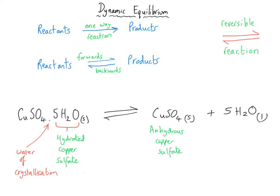In that reaction the forward reaction is endothermic, meaning the temperature drops and it requires being heated to work. The reverse reaction is exothermic, meaning when you add water to the anhydrous copper sulfate the temperature goes up. That is a characteristic of any reversible reaction: one direction will be exothermic and the other endothermic by the exact same amount. It doesn't have to be backwards as one and forwards as the other — it can totally vary.